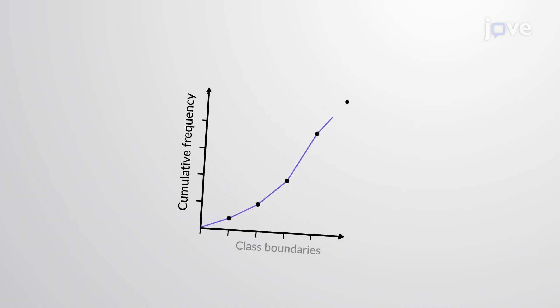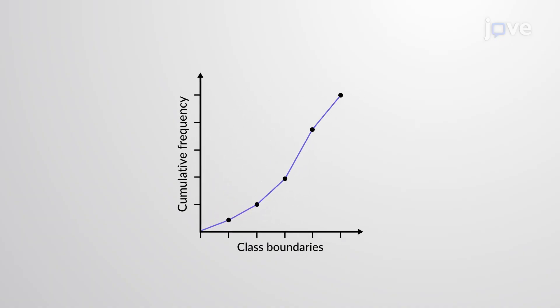The cumulative frequencies can be visually represented using the ogive graph. Here, the class boundaries are given along the x-axis, and the cumulative frequencies are provided along the y-axis.